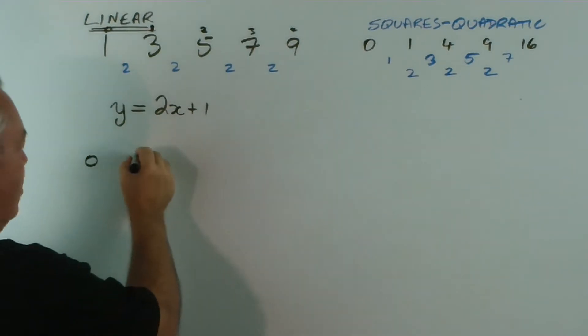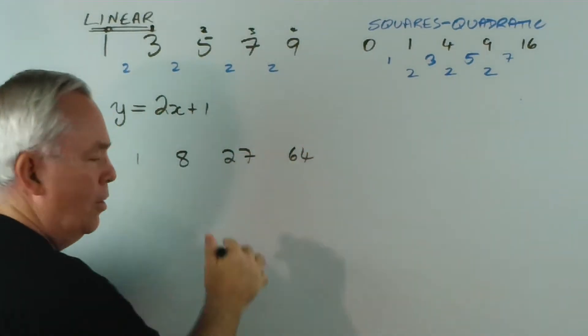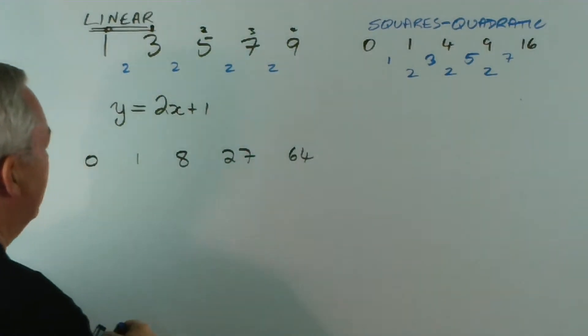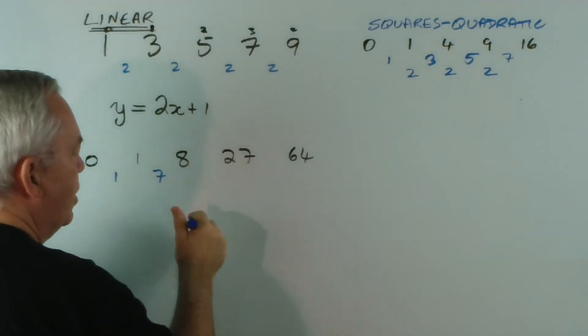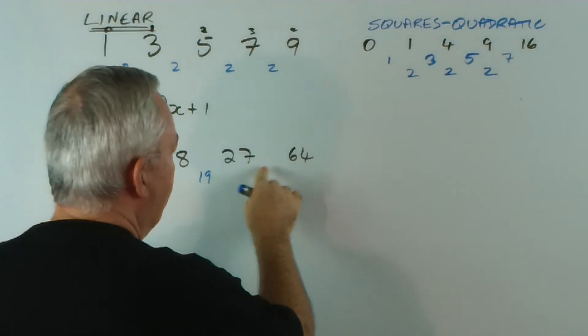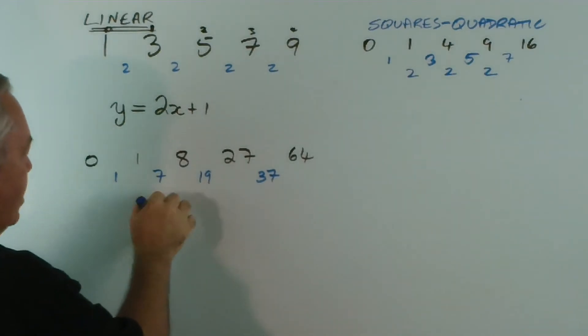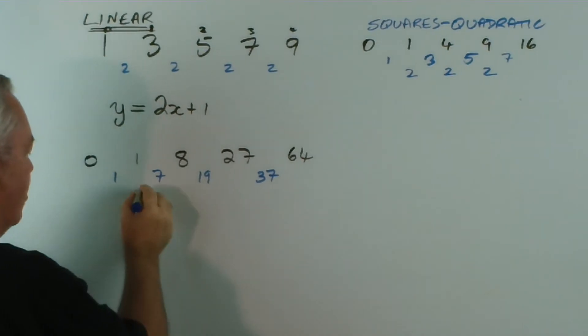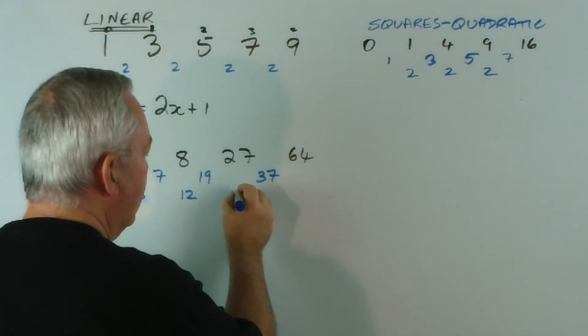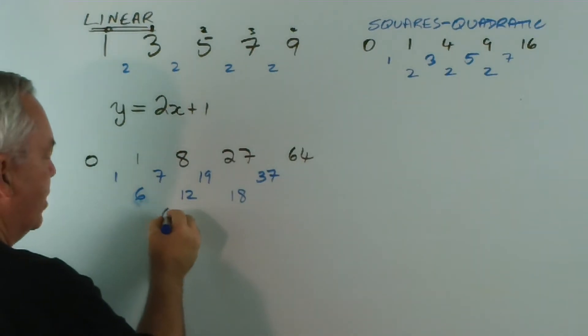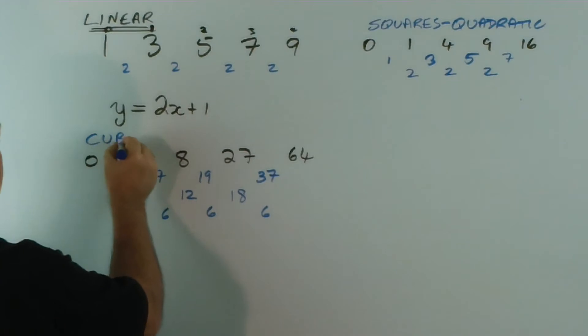Let's look at cubes. Well, 0 cubed is 0, 1 cubed is 1, 2 cubed is 8, 3 cubed is 27, and 4 cubed is 64. We could keep going, that might be enough. Let's look at the gaps. 0 to 1 is a gap of 1, 1 to 8 is a gap of 7, 8 to 27 is a gap of 19, and from 27 to 64 is a gap of 37. Let's look at the next differences. From 1 to 7... Sorry, I was adding there instead of subtracting. From 7 to 19 is 12. From 19 to 37 is a gap of 18. And look at the gaps here. From 6 to 12 is 6. From 12 to 18 is 6.